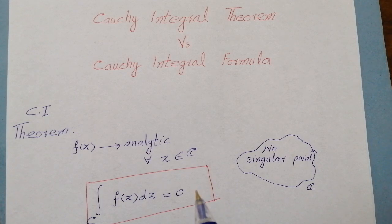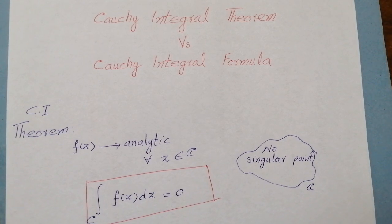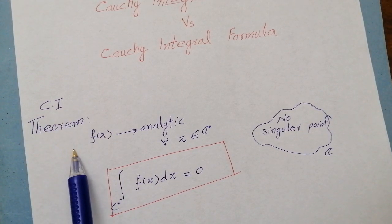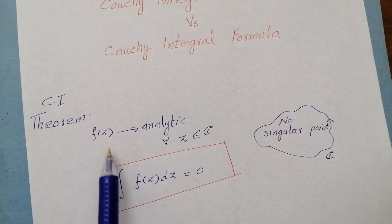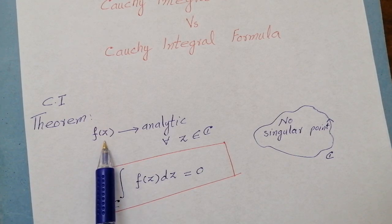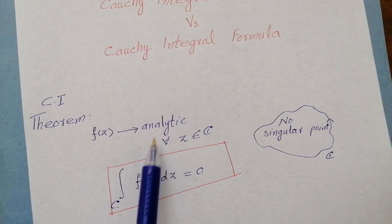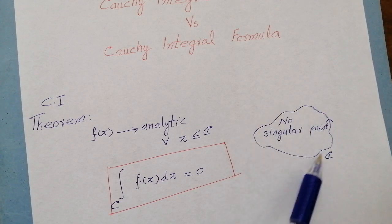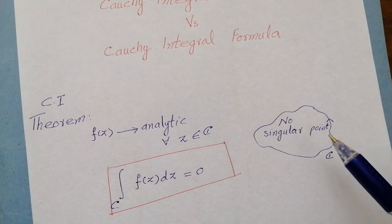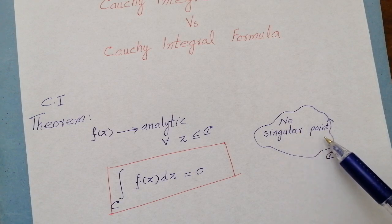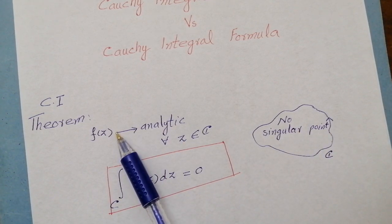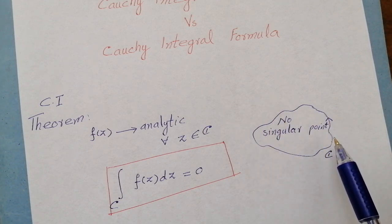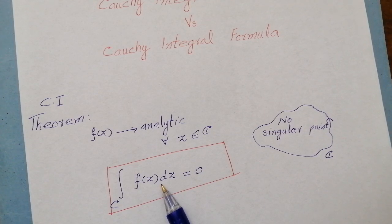First of all, let us see the statements of these two results. Cauchy Integral Theorem: if we are given a function f(z) which is analytic for all points inside and on a closed simple curve C — in other words, if there is no singular point of f(z) inside this curve C or on the boundary — then this integral will vanish.